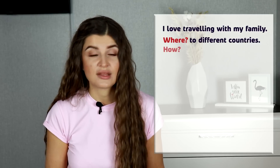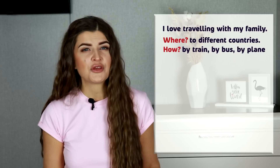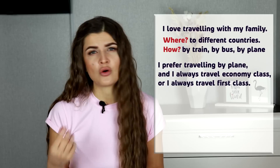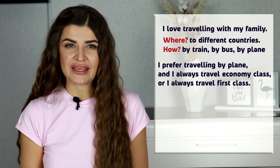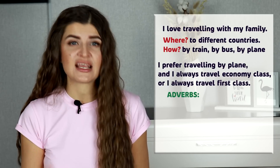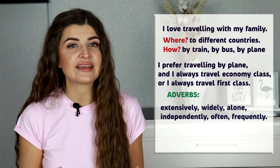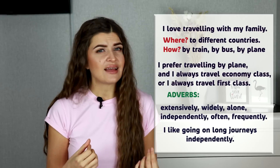I love traveling with my family — where? To different countries. How? By train, by bus, or by plane. You can say 'I prefer traveling by plane and I always travel economy class,' or maybe 'I always travel first class.' You can make it a little bit more complex and add some adverbs: extensively, wildly, alone, independently, often, frequently. For instance, 'I like going on long journeys independently.' As you construct the 10 sentences, please don't forget to write everything down. Now you have your notebook with all these phrases — a little script for the conversation. You've prepared it before the conversation, and this helps you feel more confident, so when you're going to speak with someone about traveling, your brain will immediately remember those phrases.